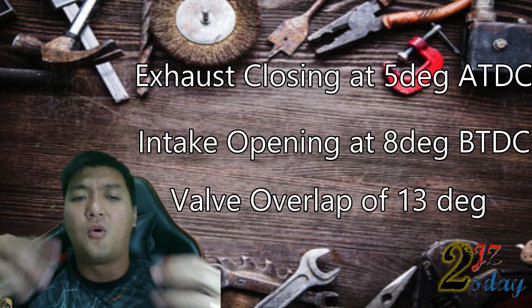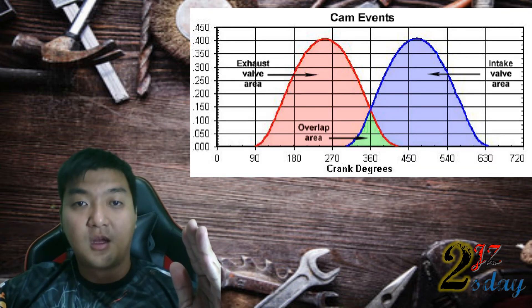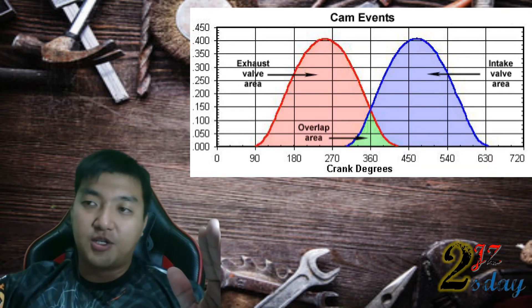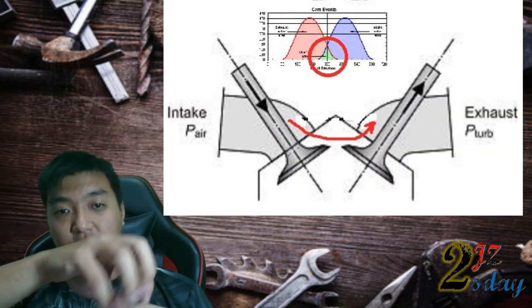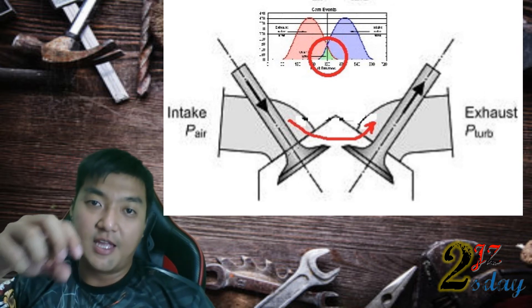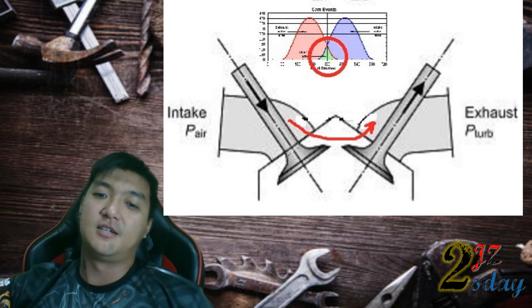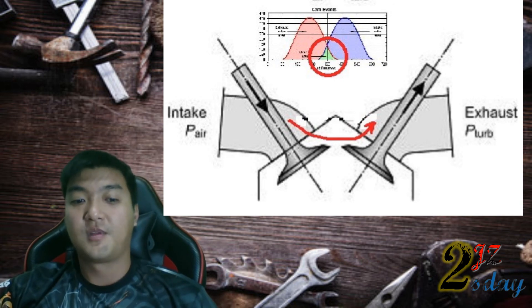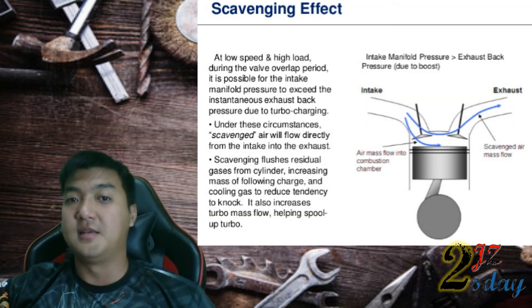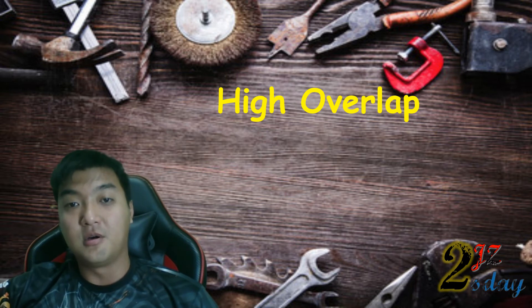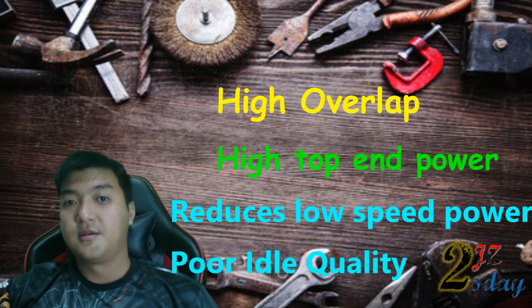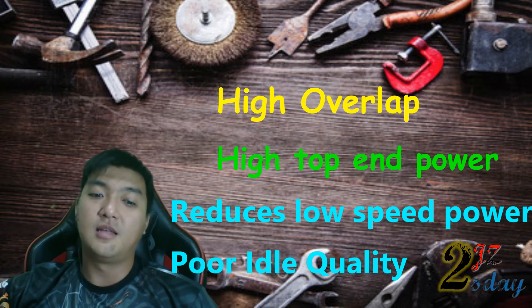So why do we use overlap? At high engine speed, overlap allows a rush of exhaust gas out of the exhaust valve, and this motion helps pull the fresh air and fuel mixture into the cylinder through the intake valve. Increased engine speed enhances this effect, especially at high RPM. Increasing overlap increases top-end power but reduces low-speed power and idle quality.